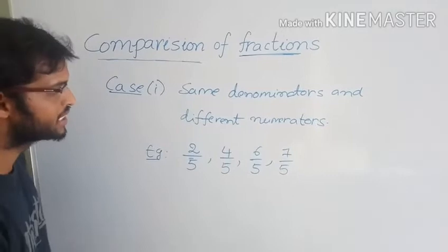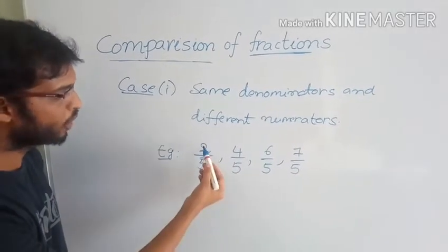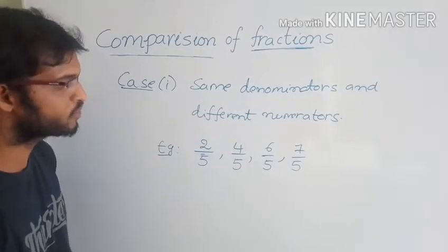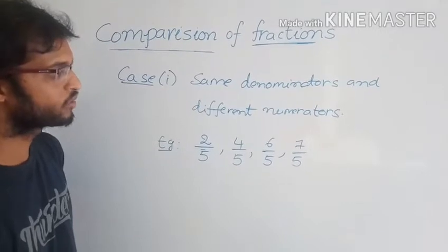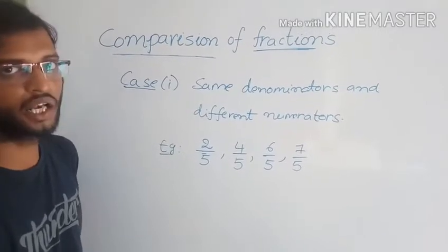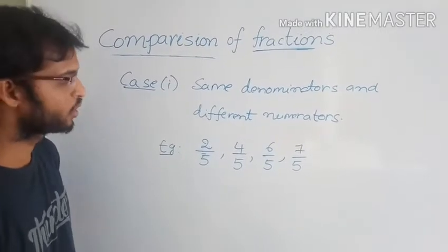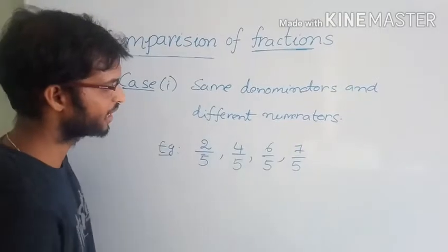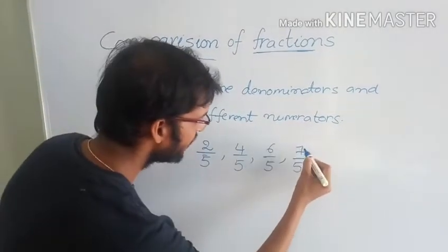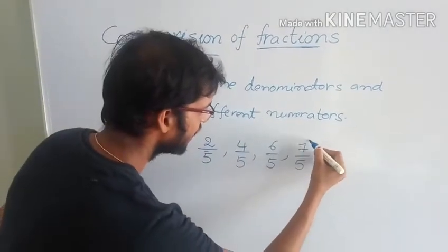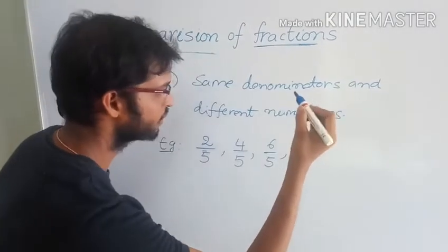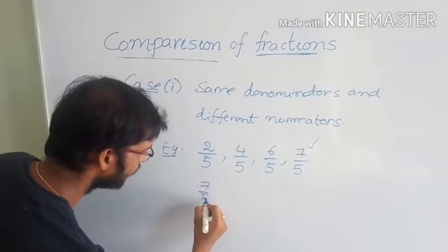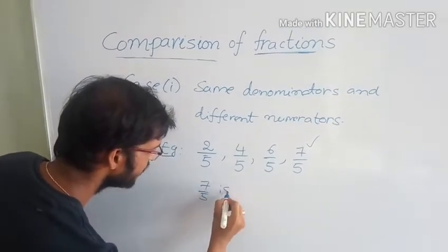In this case, observe only the numerators. Whichever numerator has a greater value, that fraction is greater. Among the numerators 2, 4, 6, 7 — 7 has the greatest value. So, 7 by 5 is the greatest fraction.